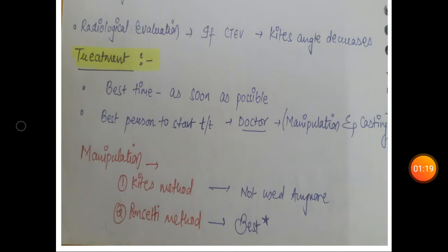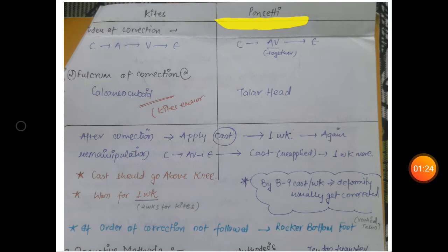These are actually two philosophies for correction. There are three major differences between Kites and Ponseti method: order of correction, site at which fulcrum of correction is applied, and for how many weeks the cast is applied. In Kites method, the order of correction is cavus, adduction, varus, and equinus, while in Ponseti method you take adduction and varus together.